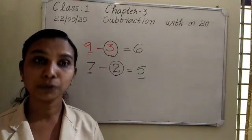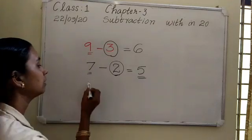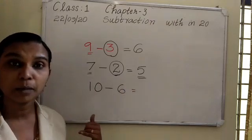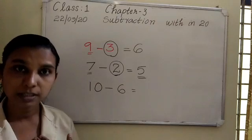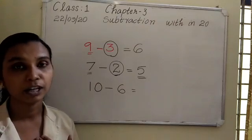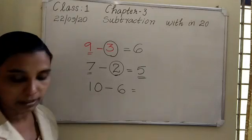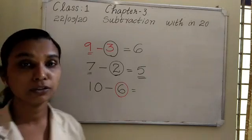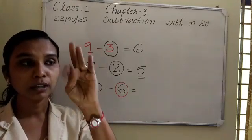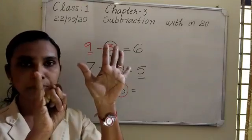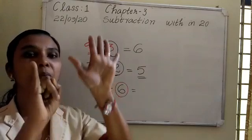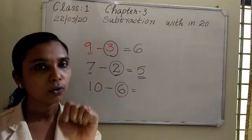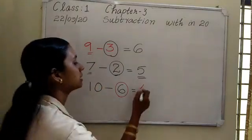One more question — all of you do together. The question is 10 minus 6. Which is the bigger number? It is 10. Keep 10 in your mind and take the smaller number 6 on your fingers: 1, 2, 3, 4, 5, 6. Then count backward from 10: 9, 8, 7, 6, 5, 4. So the difference is 4.